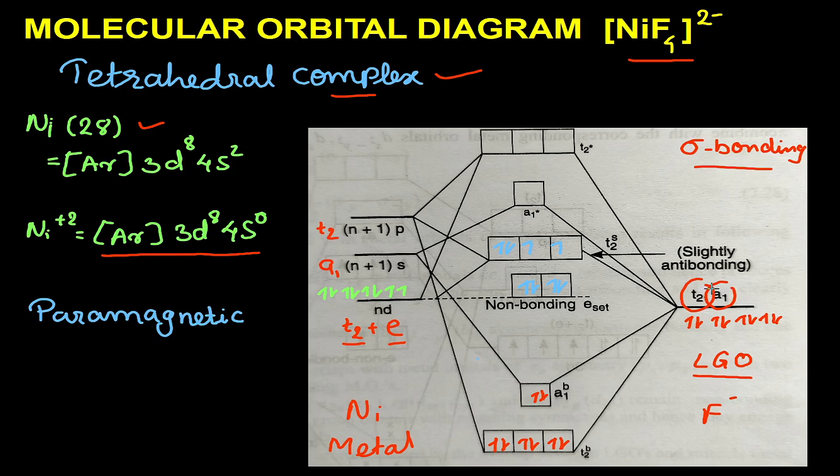This a₁ of the ligand will combine with a₁ of the metal. As a result, we will get a bonding molecular orbital and an antibonding molecular orbital.